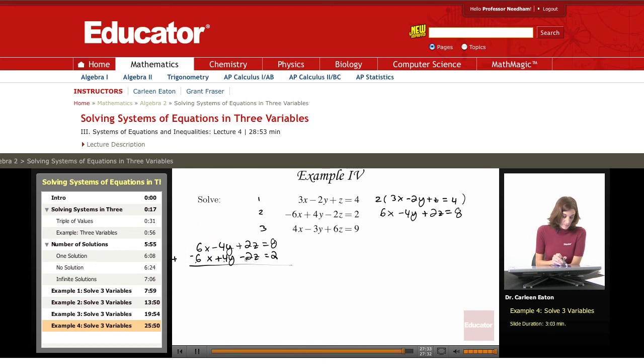Okay. So I've got 6x minus 6x, that's 0. Negative 4y and 4y, 0. 2z and negative 2z, 0. 8 and 2, 10. 0 equals 10.